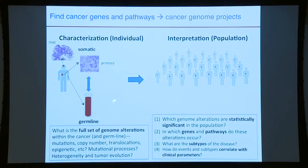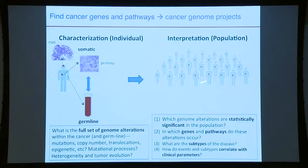Then there's the interpretation problem, where we take characterization data across a population of patients and ask different questions: what genomic alterations are statistically significant beyond what you'd expect by chance? What genes and pathways have more mutations than expected? What are the subtypes of the disease? Are subtypes and events correlated with clinical parameters? This is the interpretation task.